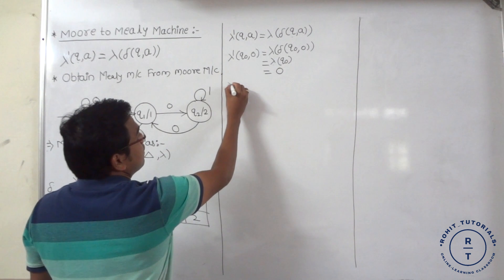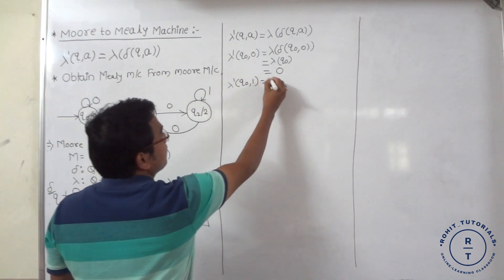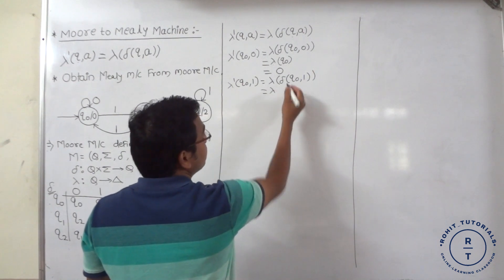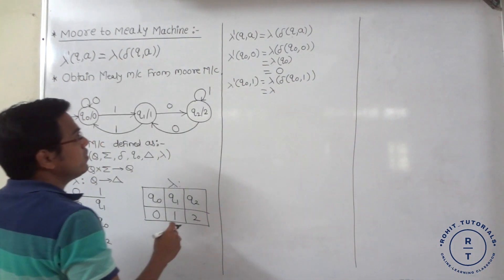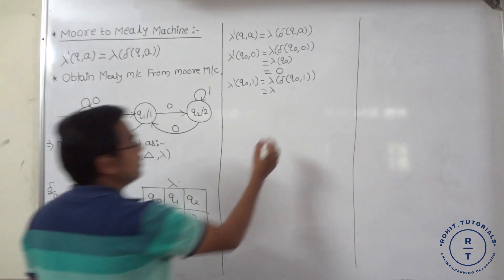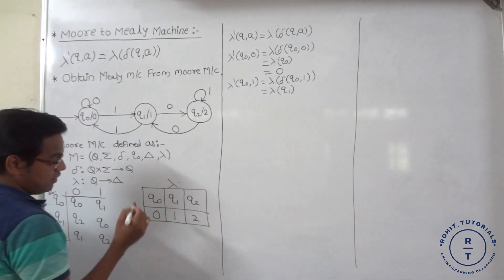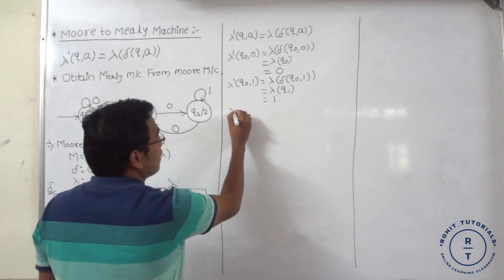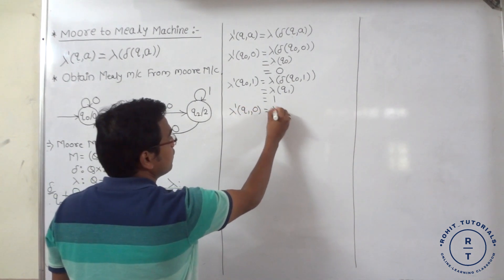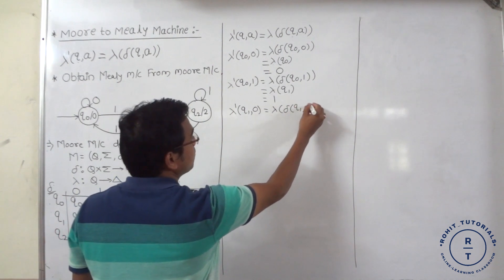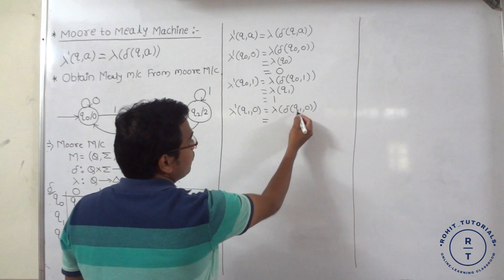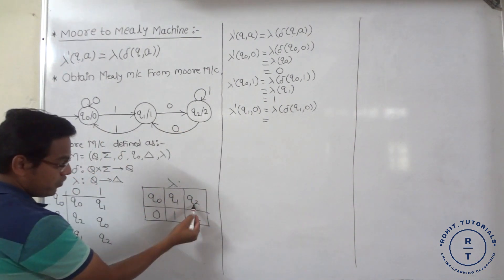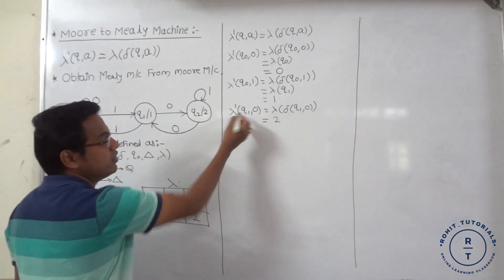Next, lambda dash(q0, 1): lambda of transition function q0 with input 1. At q0 state, when 1 occurs, it goes to q1. Lambda of q1 is 1. Now for lambda dash(q1, 0): lambda of transition function q1 with input 0. At q1 state, when 0 occurs, it goes to q2. Lambda of q2 is 2 — that is the output at this particular state.